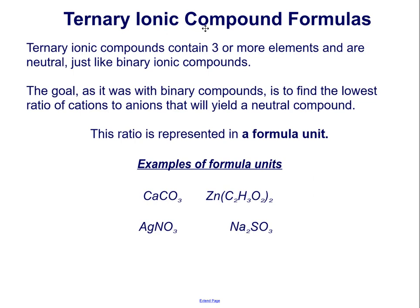Ternary ionic compounds contain three or more elements and are neutral, just like binary ionic compounds. The goal, as it was with binary compounds, is to find the lowest ratio of cations to anions that will yield a neutral compound. This ratio is expressed in a formula unit.